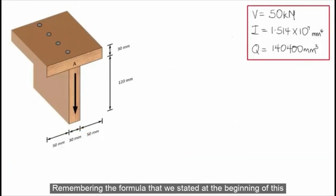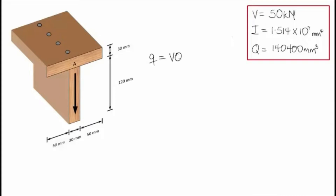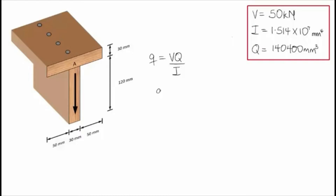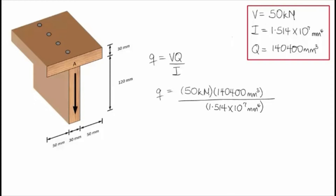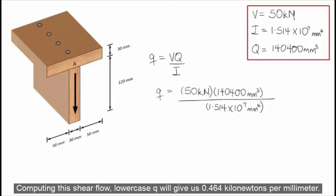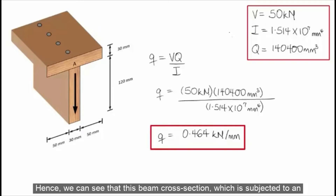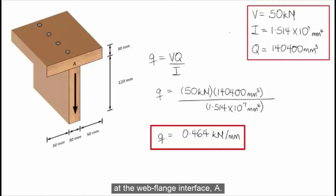Remembering the formula stated at the beginning of this example, shear flow lowercase q is equal to VQ over I. Substituting the properties of this beam cross-section that we have calculated into this equation and computing, shear flow lowercase q gives us 0.464 kilonewtons per millimeter. Hence, this beam cross-section subjected to an internal shear force V of 50 kilonewtons will have a shear flow of 0.464 kilonewtons per millimeter at the web-flange interface A.